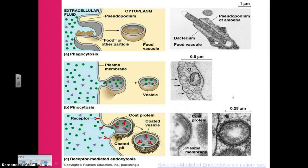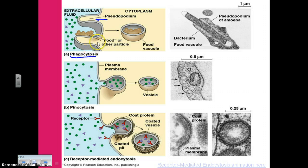The first one is called phagocytosis — the word literally means cell eating. Here's where we see the cell membrane reaching out and actually grabbing food particles, wrapping around just like we saw in that short video clip of the amoeba. Then the membranes fuse together on the other end, and now you have a food vacuole with the food particles inside.